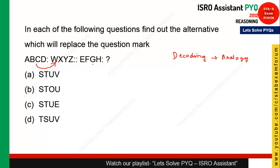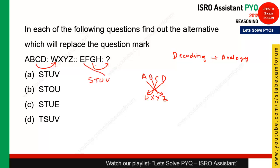The code word is A B C D and it is coded as W X Y Z — they are reversely written. A's reverse end is Z, B's is Y, C's is X, and D's is W. Similarly, for F G H, the reverse will be U T S respectively. So option A is the correct answer.